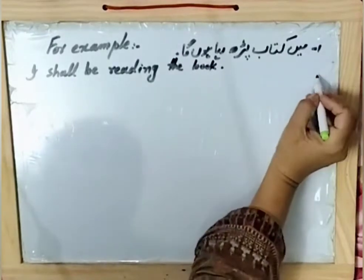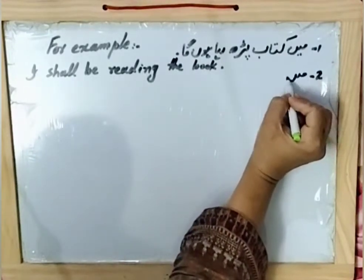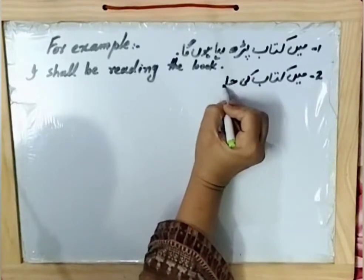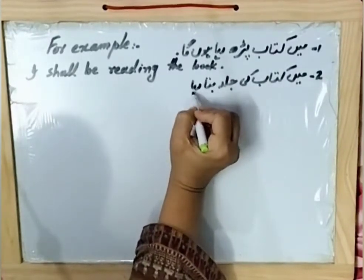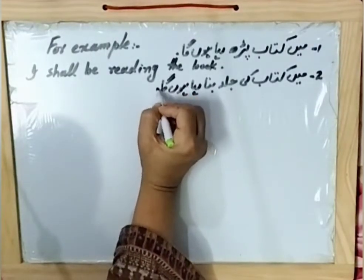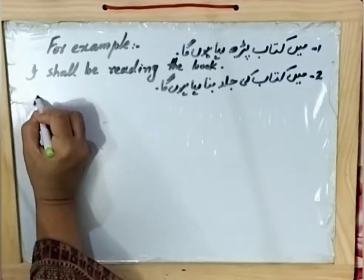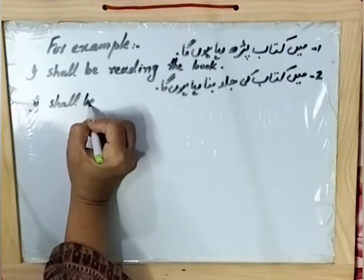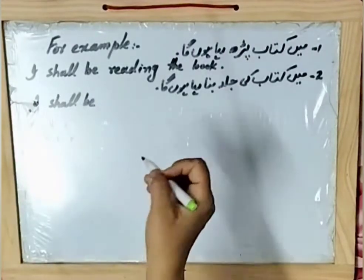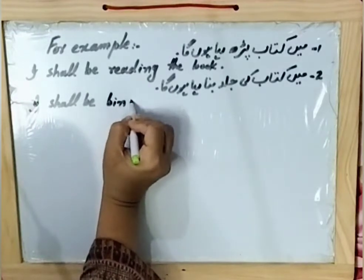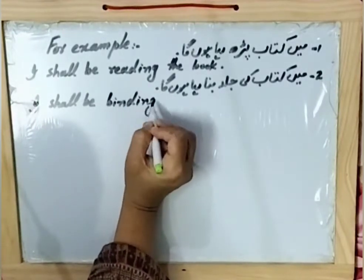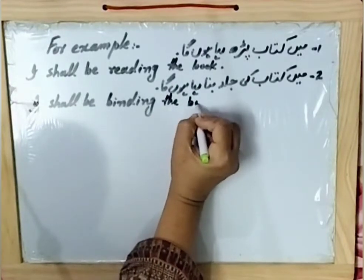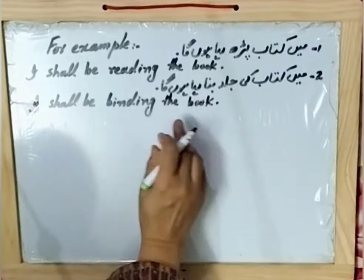Example number two: 'Main kitaab ki jild bana raha hounga' — I will be binding the book. Subject is 'main' — 'I.' Helping verb: 'shall be.' The English for 'jild banana' is 'binding' — 'bind' plus '-ing.' So: I shall be binding the book.